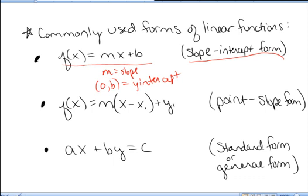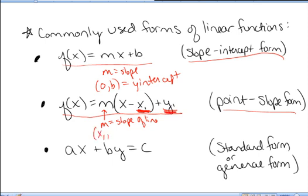Another very commonly used form is f of x equals m times the quantity x minus x1, plus y1. This is called the point-slope form of a line. Again, m is the slope of the line, but the numbers x1 and y1 represent an arbitrary point on the line.